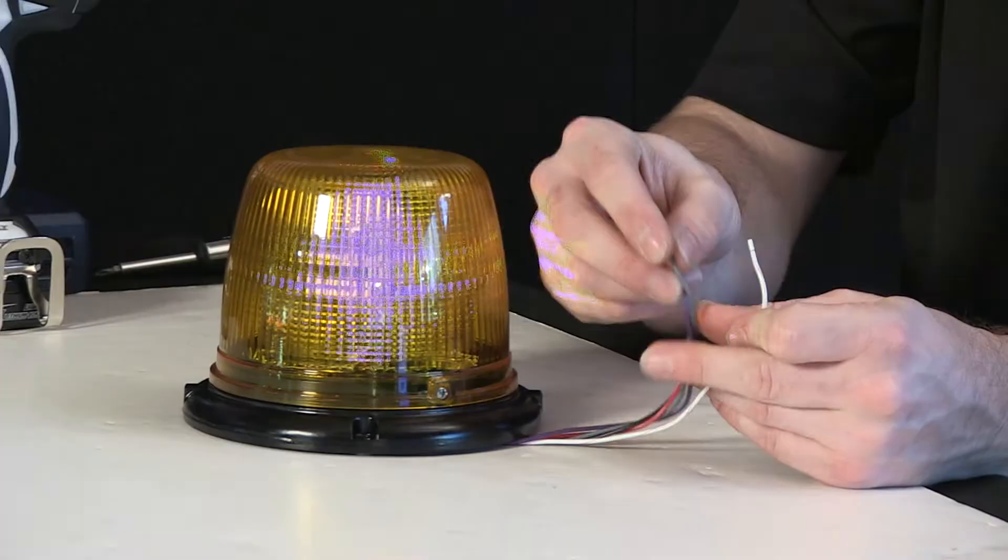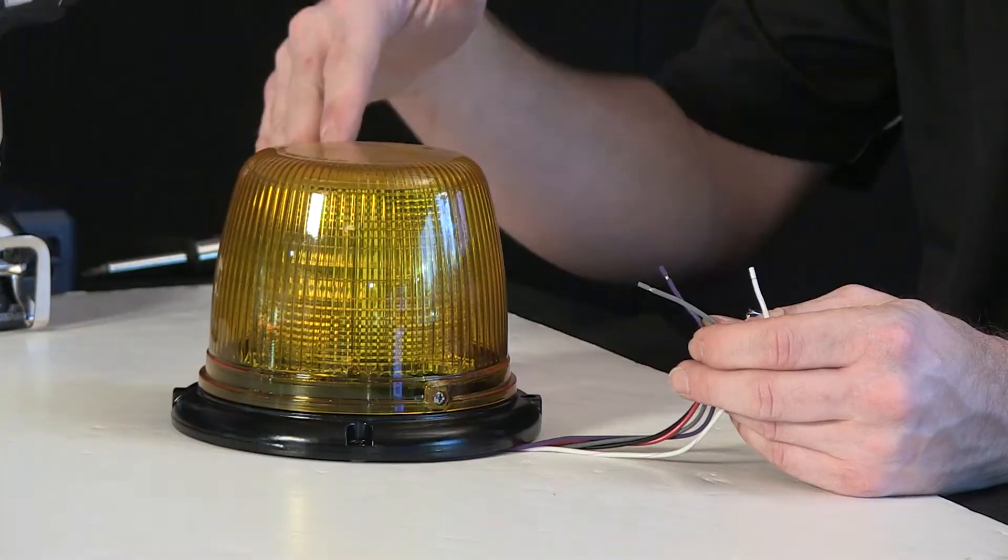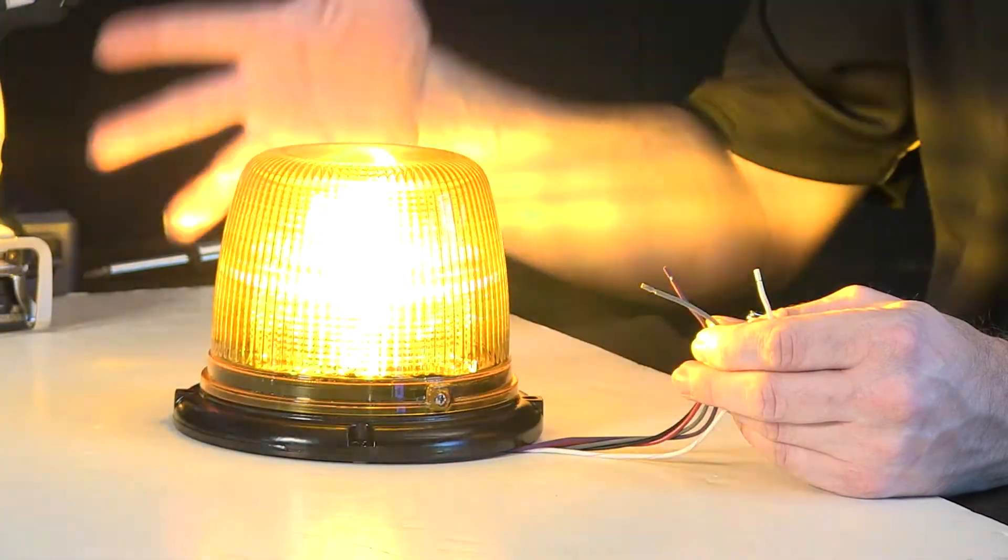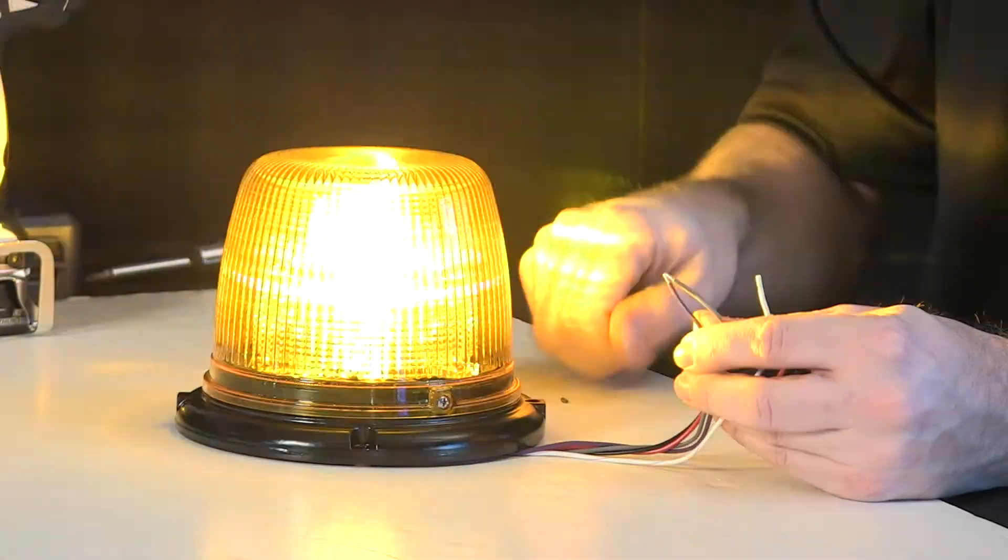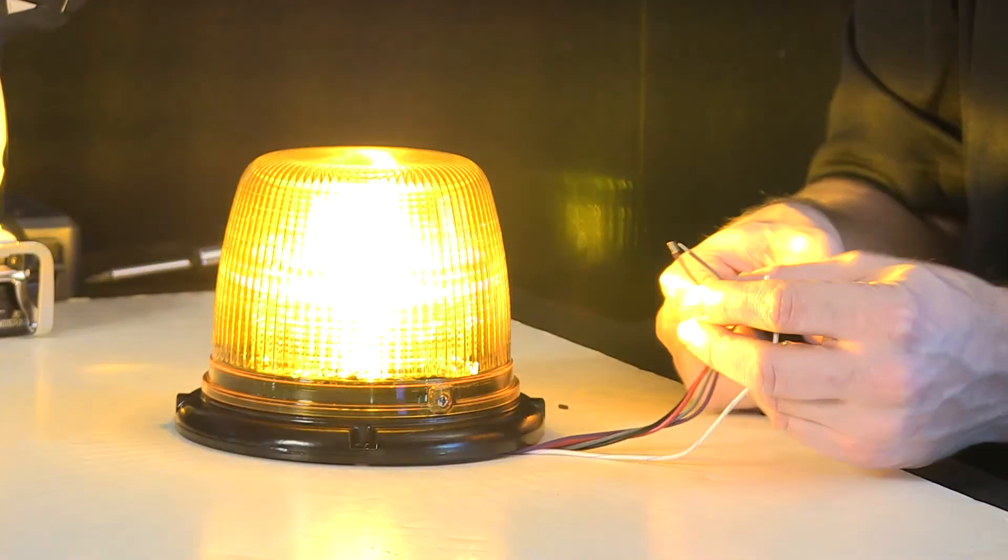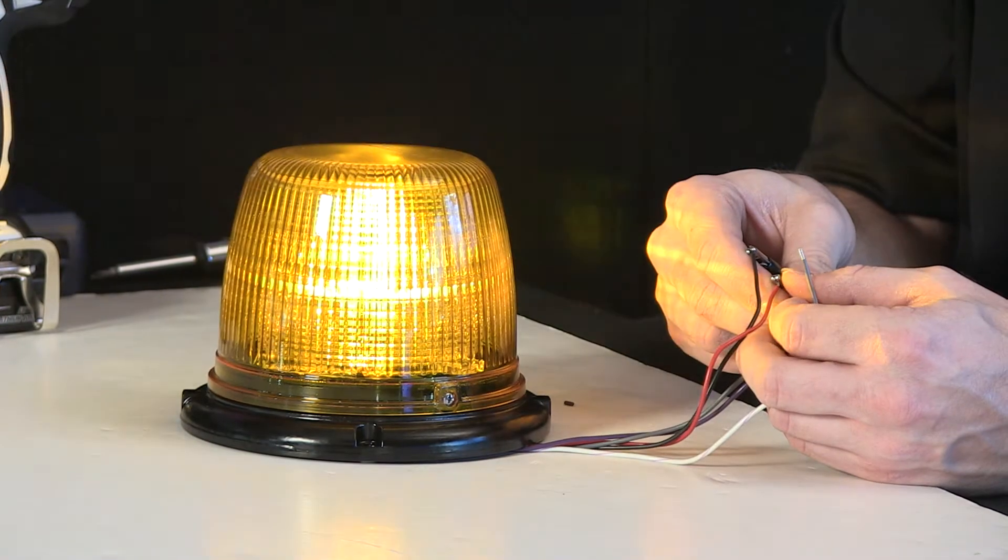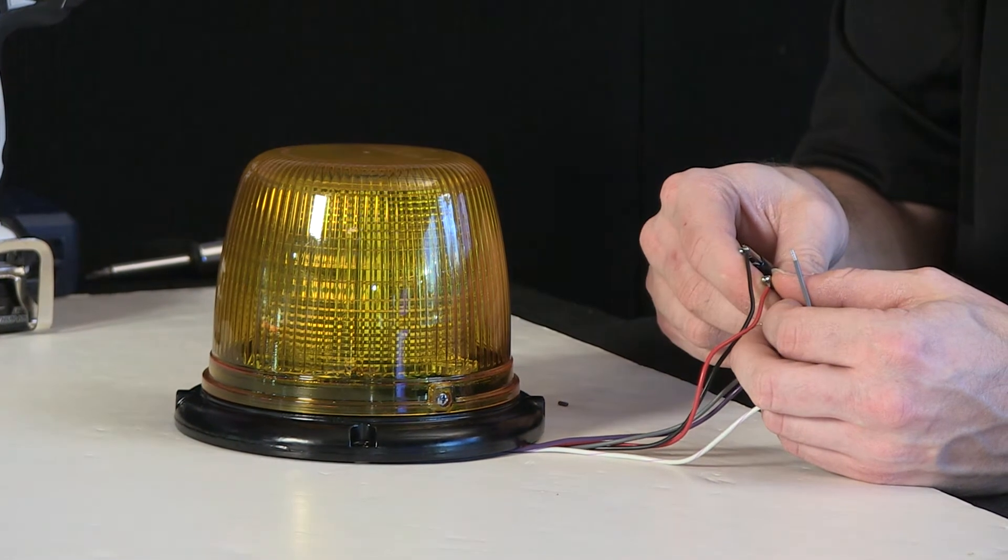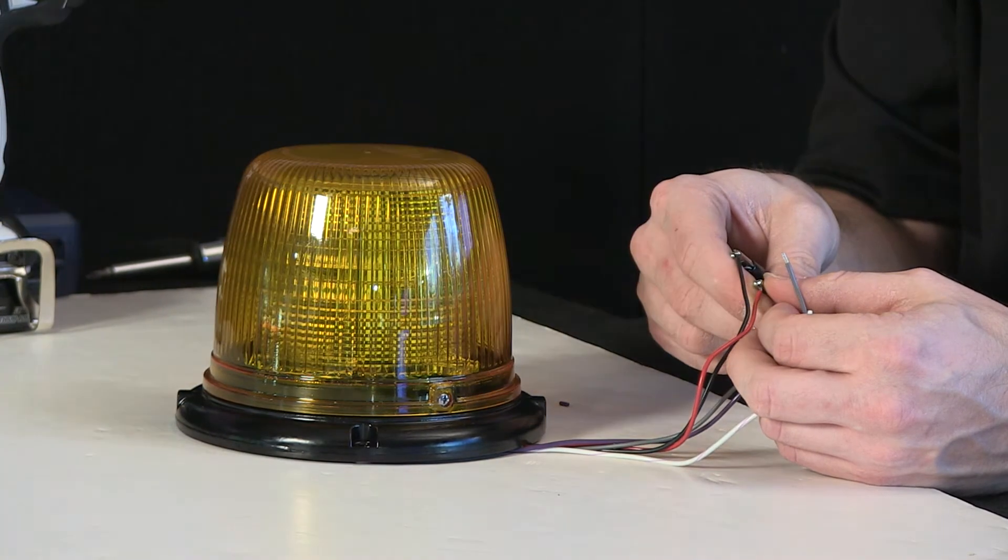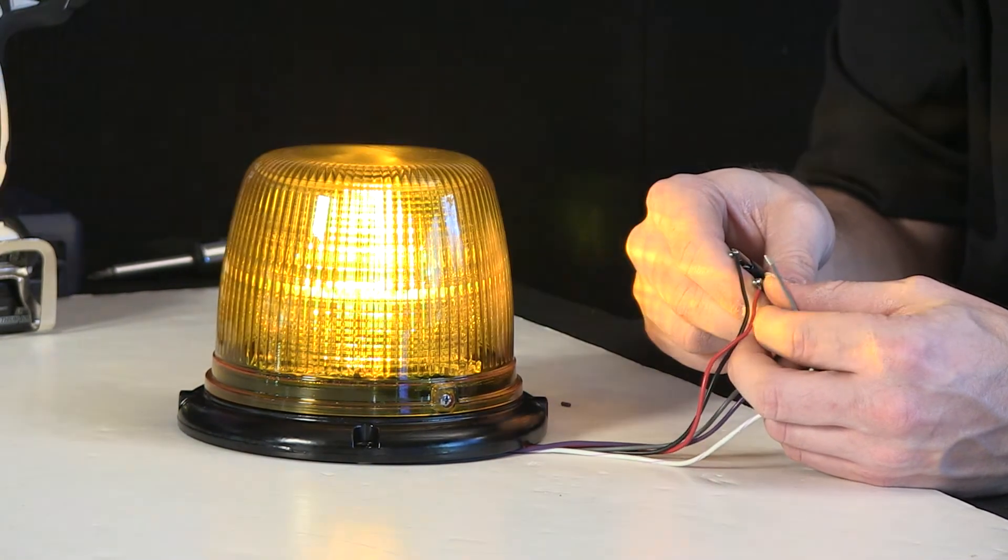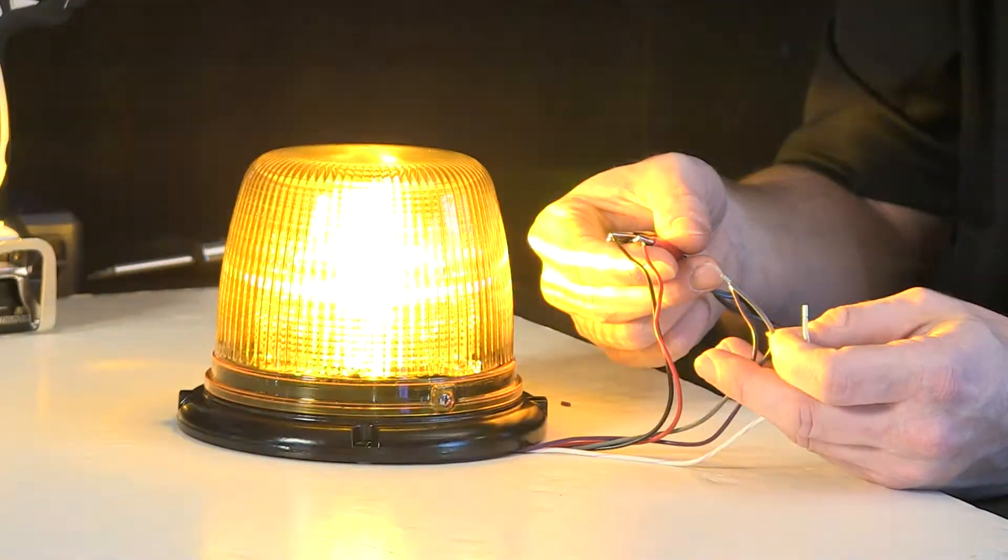You have your basic functions that Whelan offers in their LED products. You have a sync, so if you have multiples on a rig, you can tie them together for simultaneous alternating or simultaneous flashing together. If you want to go with a high-low function, take the violet trigger wire, apply it to a constant 12-volt source, and it drops the intensity. That way you have your high-low function. If you don't want to blind folks too badly, put the violet to power and it drops it down. Take it away, back up to full intensity.